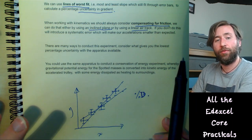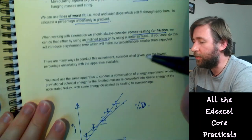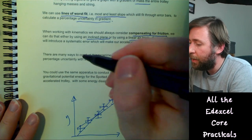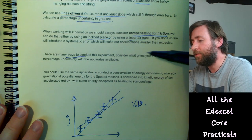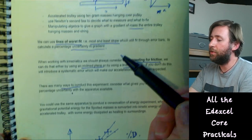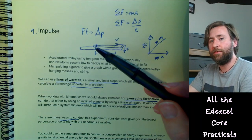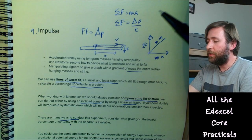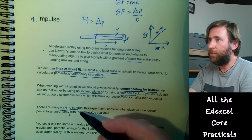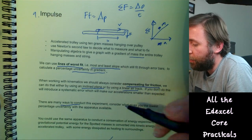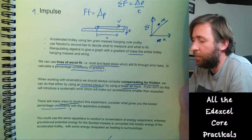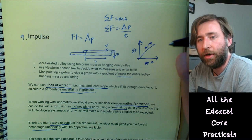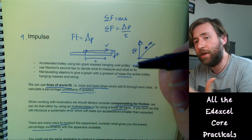There are many ways to conduct this experiment — consider what gives the lowest percentage uncertainty with the apparatus available. You can do it without light gates by measuring time from rest over a distance s and calculating acceleration from that. Think about how you can increase the distance or reduce the force to give a longer time, reducing the percentage uncertainty in timing. If you can't eliminate friction completely, you could also consider a conservation-of-energy experiment.